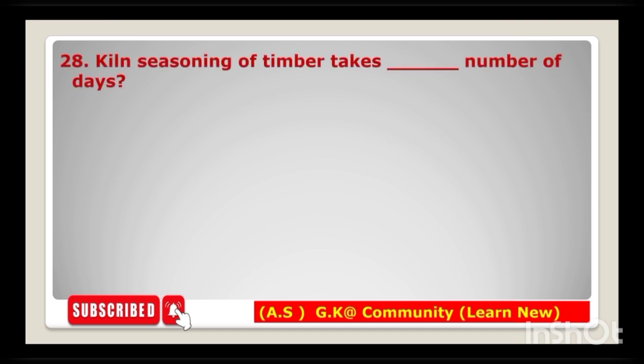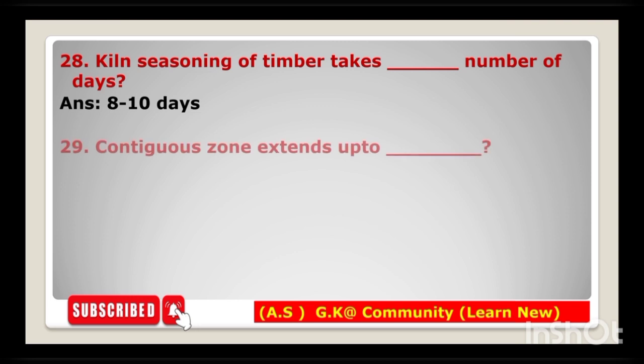Next: kiln seasoning of timber takes how many days? The answer is 8 to 10 days. Next: contiguous zone extends up to — the answer is 24 nautical miles.